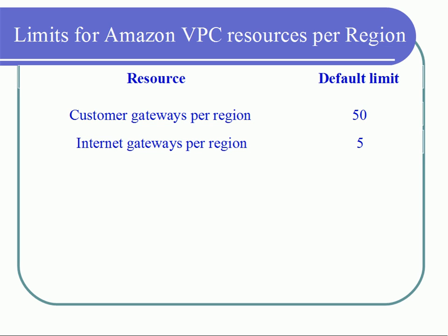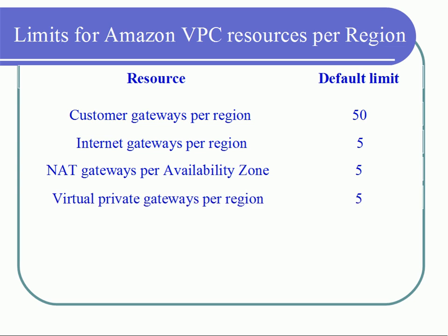For internet gateways, you can create only 5 internet gateways per region. For NAT gateways per availability zone — the availability zone may vary depending on the region you choose — you can have up to 5 NAT gateways per availability zone.